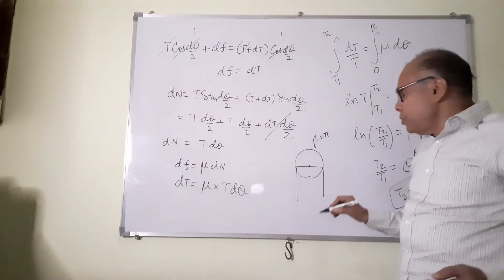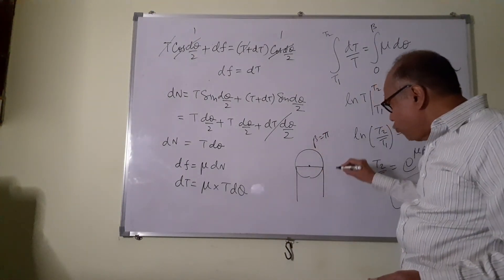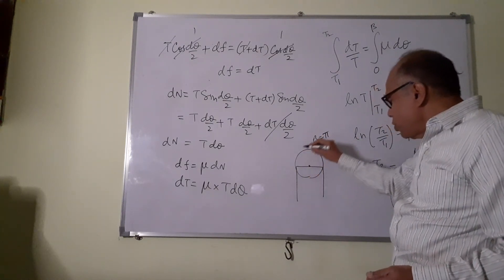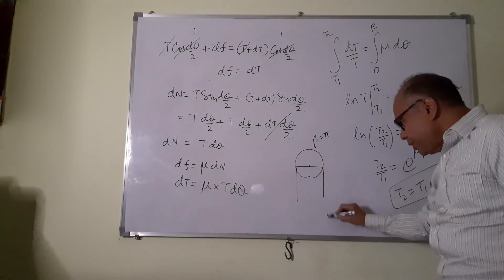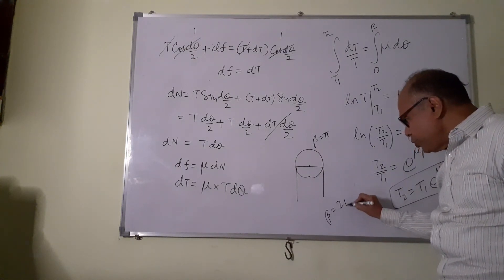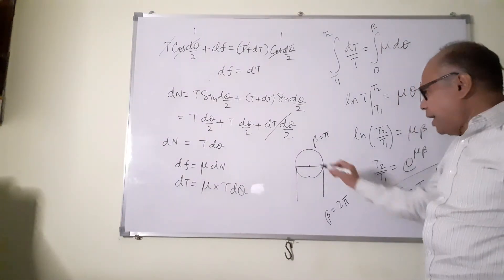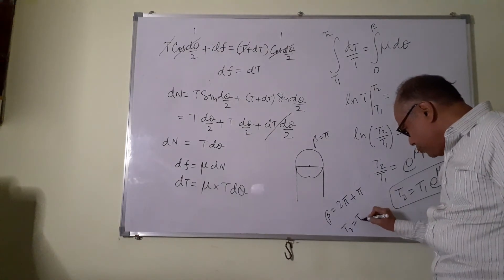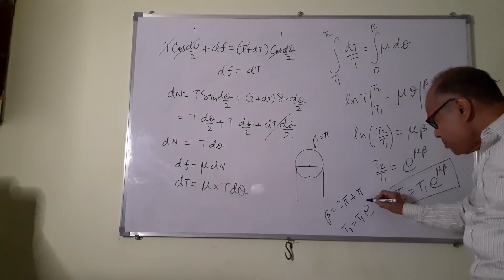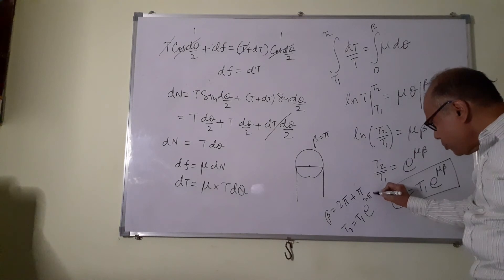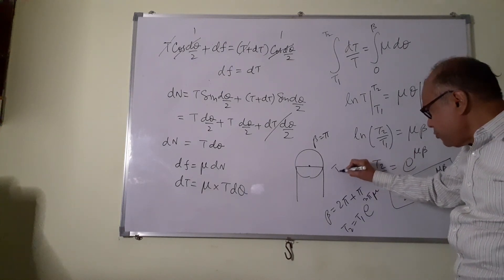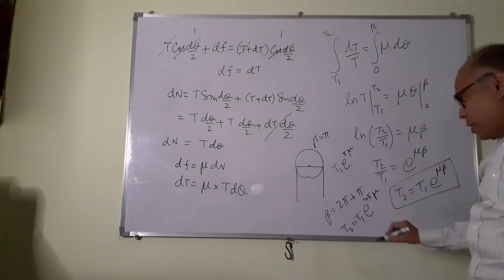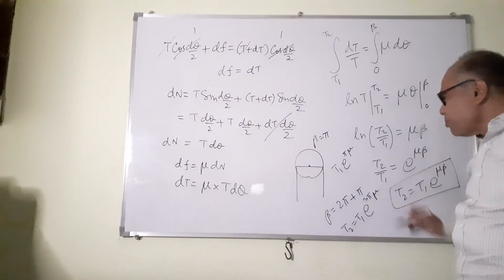Now supposing this whole thing is wound once. It is not coming straight but it is wound once and brought down here. So the beta for one round will be 2 pi, and for the half round it will be pi. So T2 will be equal to T1 e power 3 pi mu. Earlier it was T1 e power pi mu.